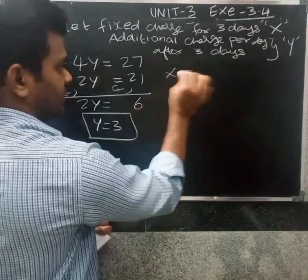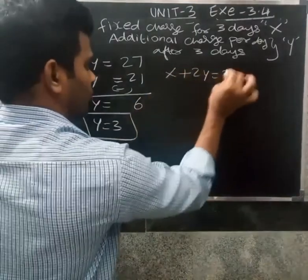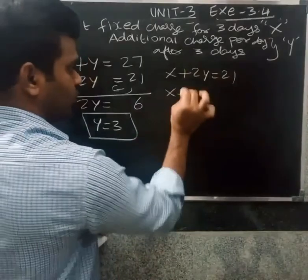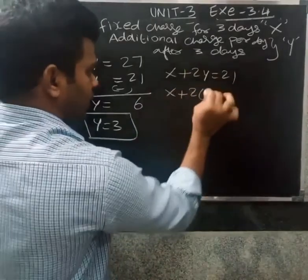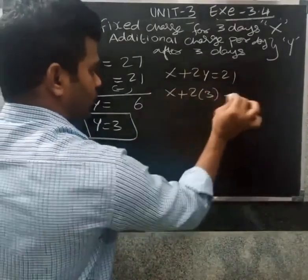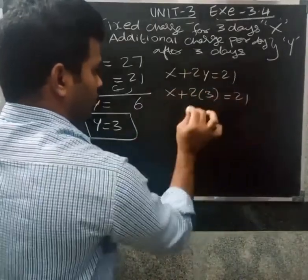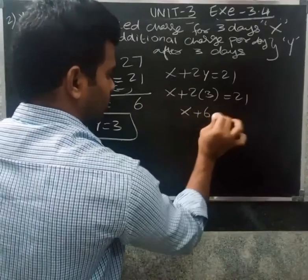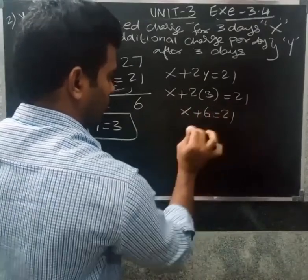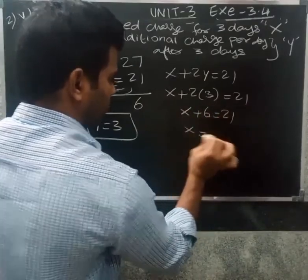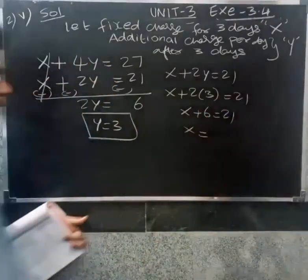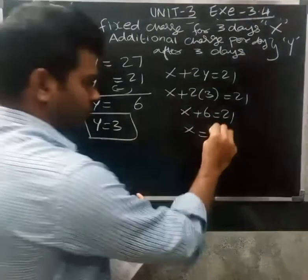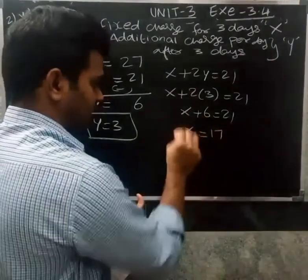Substituting y equals 3 into x plus 2y equals 21: x plus 2 into 3 equals 21, so x plus 6 equals 21, giving x equals 21 minus 6, which is x equals 15.